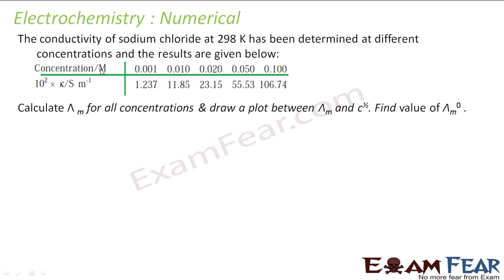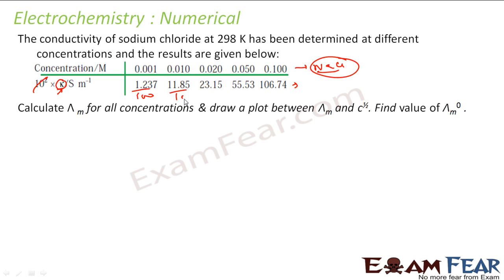These are the conductivity values of NaCl for different concentrations. The table gives 100 × K, so K (conductivity) equals the given value divided by 100. You have to find the molar conductivity λm for all concentrations.